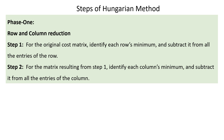Let's see the steps of the Hungarian method. The steps are categorized into two phases. Phase one is row and column reduction. Step one: from the original matrix, identify each row's minimum and subtract it from all entries of that row. Step two: from the resulting matrix of step one, identify each column's minimum and subtract it from all entries of that column.